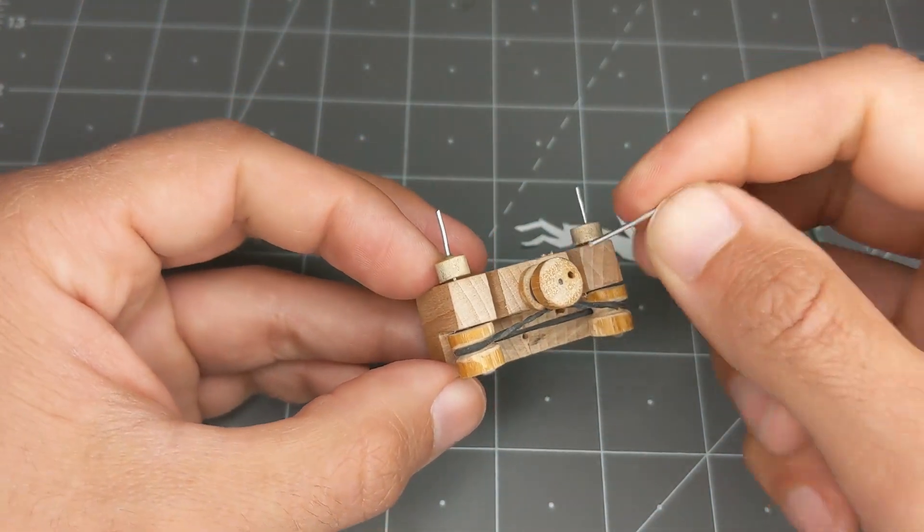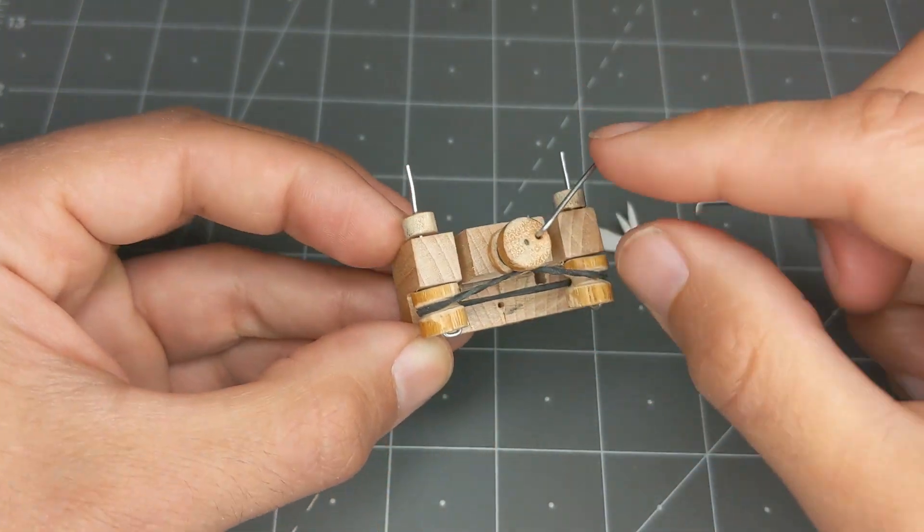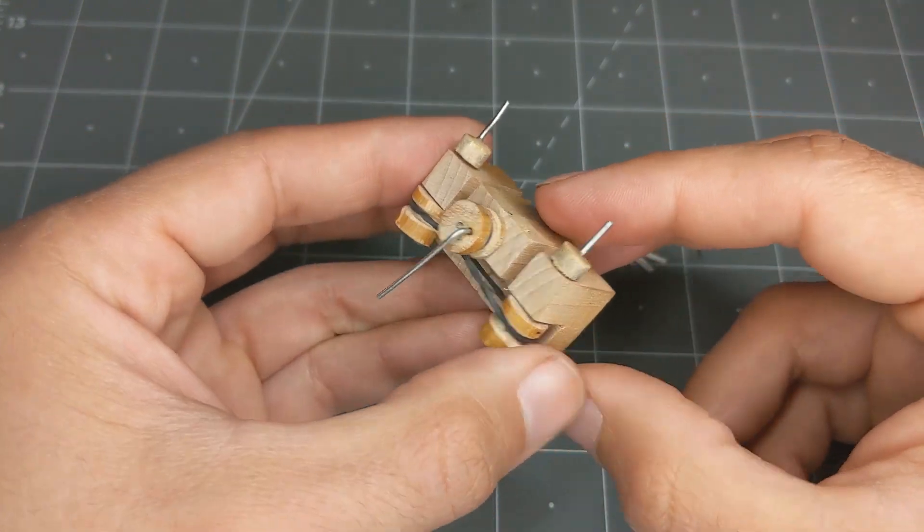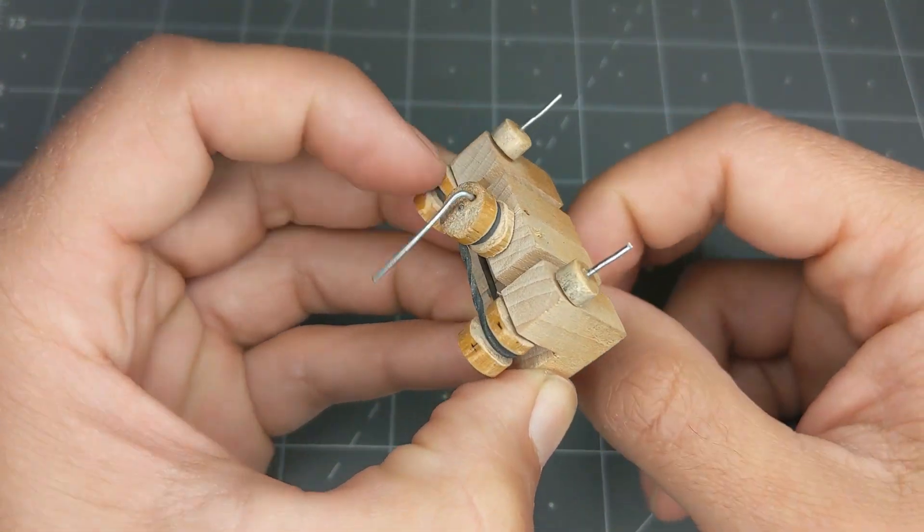So this wire gets attached to that pulley, it spins freely, and so if I were to spin it, you can see it goes all over the place.